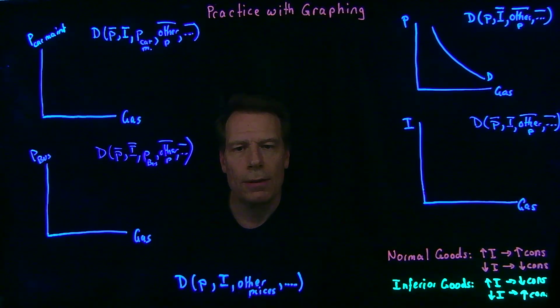What would that relationship look like? Would it be upward sloping? Or would it be downward sloping?